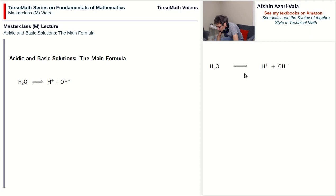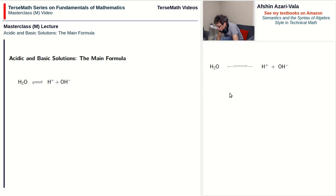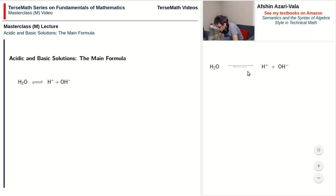If we change the size of the double arrows — say the bottom arrow is longer — now the forward reaction is happening slower than the backward reaction. For example, if a thousand H2O molecules break down in one minute, two thousand water molecules are reformed because the backward reaction is happening faster. In the balance, we are gaining water molecules and losing H-plus and OH-minus. Conversely, if the top arrow is longer, more water molecules break down than are formed, so we lose water molecules and gain H-plus and OH-minus ions.